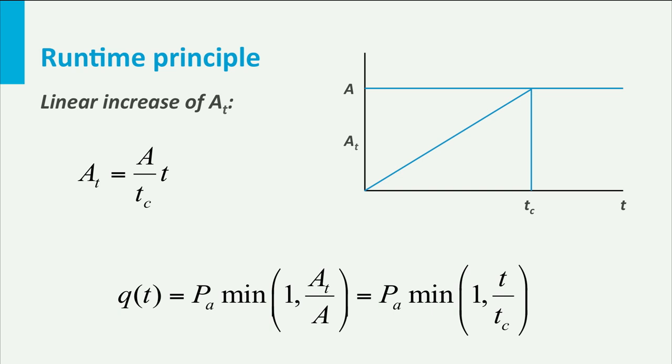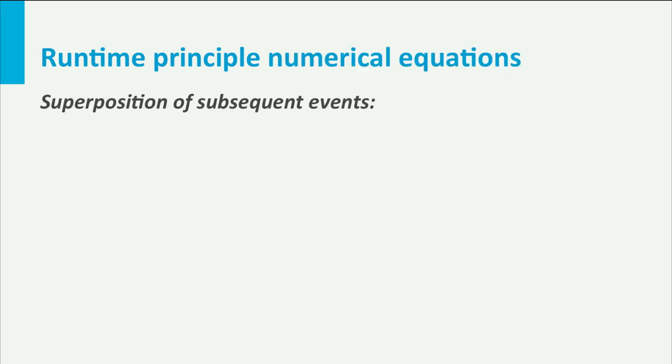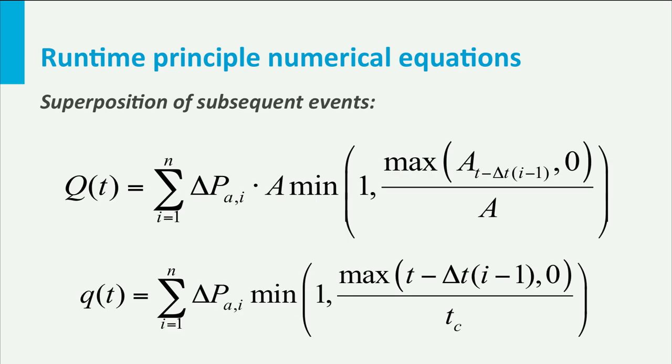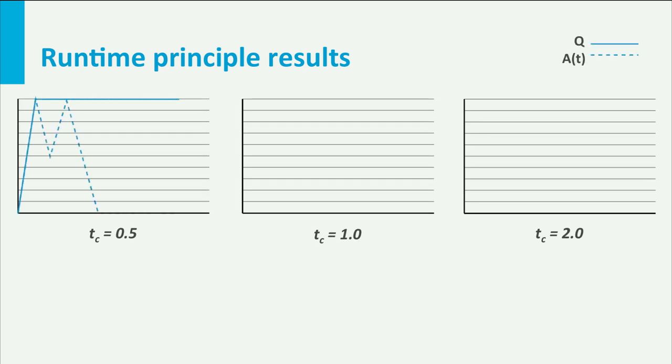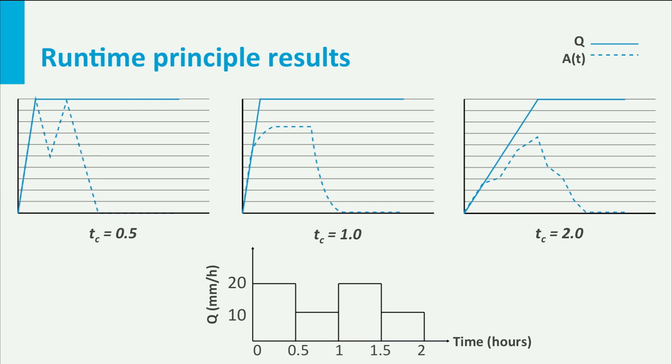The time of concentration is the time it takes for the most remote part of the catchment to contribute to the discharge. If you have subsequent precipitation events of fixed time steps, then we can also transfer this solution into a numerical scheme, which can be readily incorporated in a spreadsheet. Here you see outputs of the spreadsheet for the same effective precipitation event, but with different times of concentration.